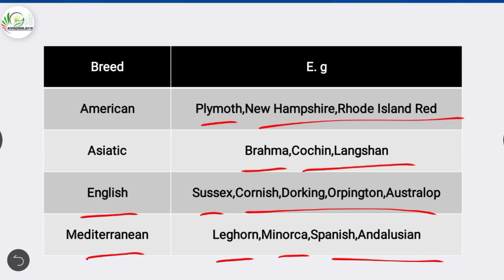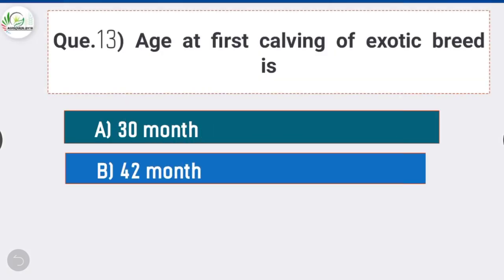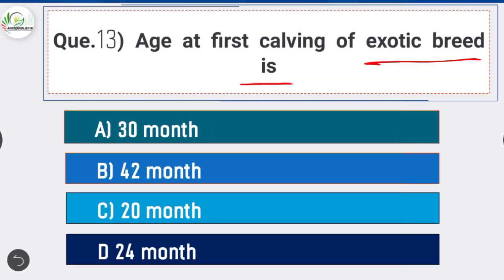Question number thirteen: the age at first calving of an exotic breed is how many months? The answer is option D - 24 months. Age at first calving of a local breed is 42 months, exotic breed is 24 months, and crossbreed is 30 months.